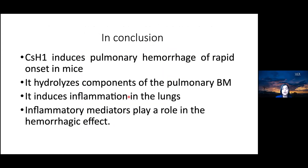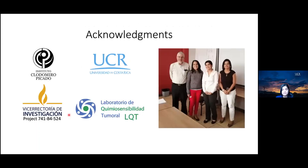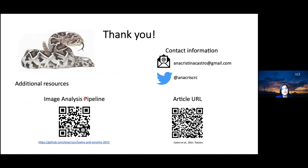In conclusion, CSH1 induces pulmonary hemorrhage of rapid onset in mice, hydrolyses components of the pulmonary basement membrane, induces inflammation in the lungs, and inflammatory mediators play a role in the hemorrhagic effects. I would like to thank Drs. Jose Maria Gutierrez, Teresa Escalante, and Alexandra Grucavado, as well as the staff at Instituto Clodomiro Picado and the LQT lab at the University of Costa Rica. This project was funded by the Vicerrectoría de Investigación of the University of Costa Rica. Thank you very much, and I'd be happy to answer any questions.